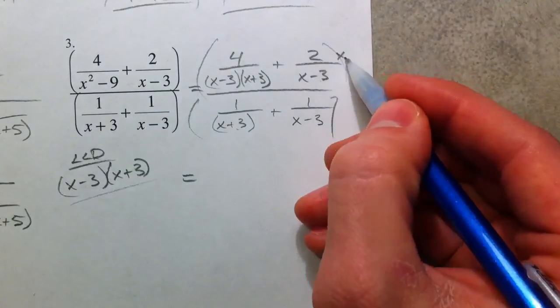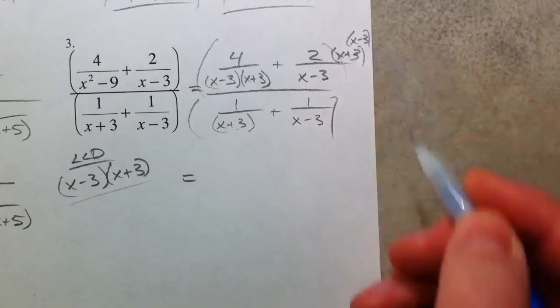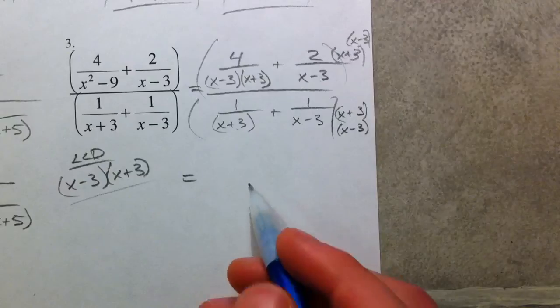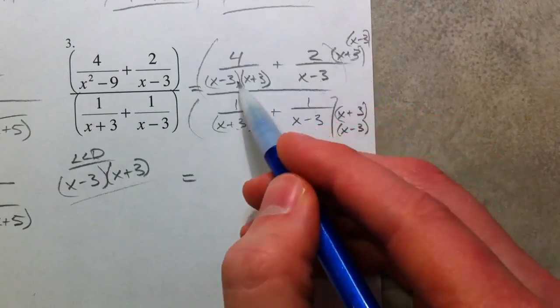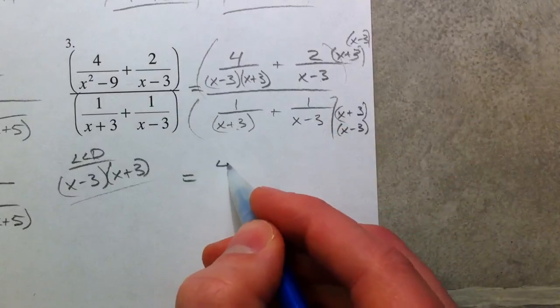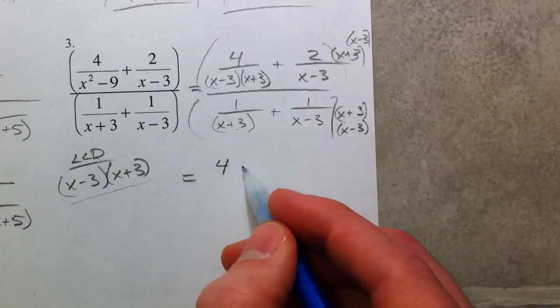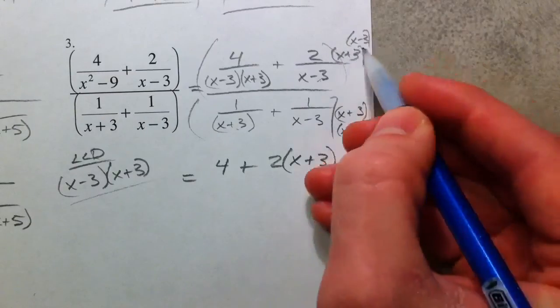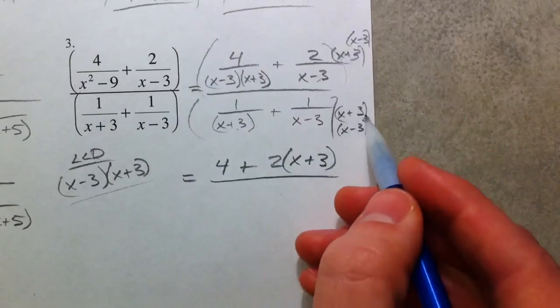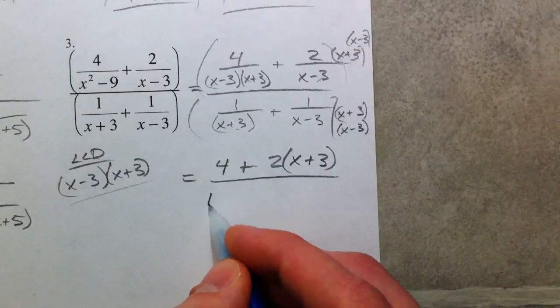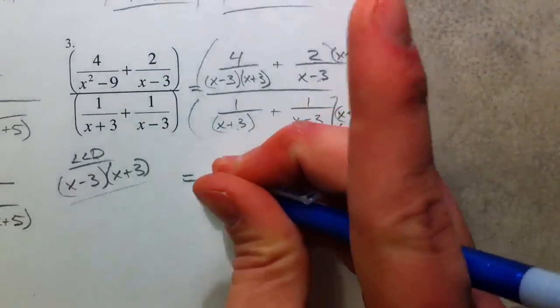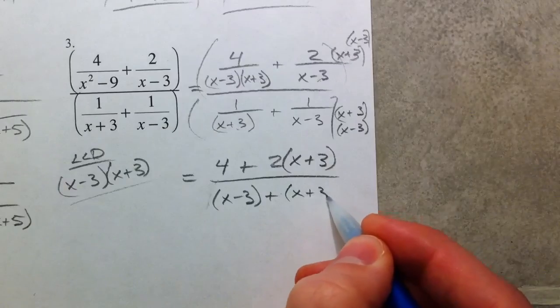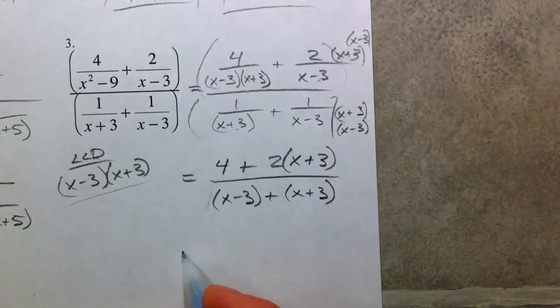And we're going to get x plus 3, x minus 3, going to multiply on top. And x plus 3, x minus 3, get multiplied on the bottom. And so when you take that times this one, x plus 3, x minus 3 cancels out. You get a 4. Whole denominator cancels out. That was the whole reason we did it. In this one, x minus 3's cancel out. And you're left with 2 times x plus 3. Because our x minus 3's cancel out. On the bottom, x plus 3's cancel each other out. You're left with 1 times x minus 3, or just x minus 3. x minus 3's cancel each other out here. And you're left with 1 times x plus 3, or just x plus 3.